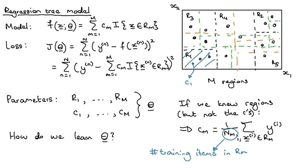Just very quickly where we ended off last time: we have the model represented with this equation, and we're trying to do regression, so we're going to use a squared loss function. If we knew the regions of the decision tree but didn't know the values assigned to each region, it's easy to show that the best thing you can do is within each region predict just the average output value of the training items assigned to that region.